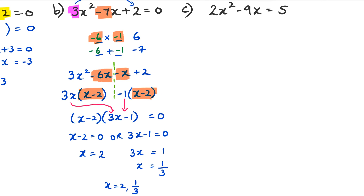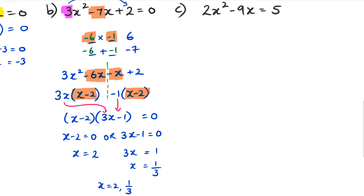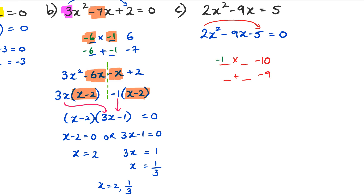Moving on to question C. The first thing to do is rearrange it so one side equals zero. I'm going to move the five to the left, giving 2x² − 9x − 5 = 0. Following the same method as question B: 2 × (−5) = −10, so I need two numbers that multiply to −10 and add to −9. Those are −10 and +1. I rewrite it as 2x² − 10x + x − 5, replacing the −9x with −10x and +1x.